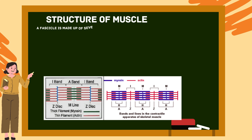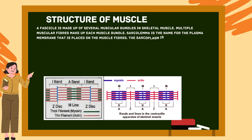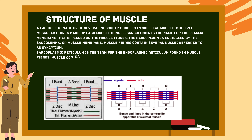Regarding the structure of muscle: a fascicle is made up of several muscular bundles in skeletal muscle, and multiple muscular fibers make up each muscle bundle. The sarcolemma is the plasma membrane placed on the muscle fibers, and the sarcoplasm is encircled by the sarcolemma. Muscle fibers contain several nuclei, referred to as syncytium. The sarcoplasmic reticulum is the term for the endoplasmic reticulum found in muscle fibers.